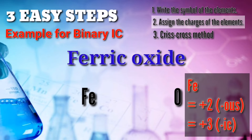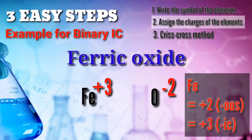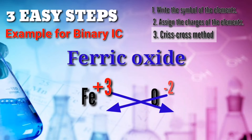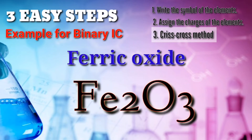Now, let's go back to our formula: ferric oxide. As you can see, we have the suffix IC. In other words, iron uses the positive 3 oxidation number. The charge of our oxygen based on the periodic table is negative 2. Now, third step: let's perform the criss-cross method. Iron positive 3 and oxygen negative 2 will exchange each other's charges. Iron will carry the negative 2 and oxygen will carry the positive 3. Therefore, the formula for ferric oxide is Fe2O3.